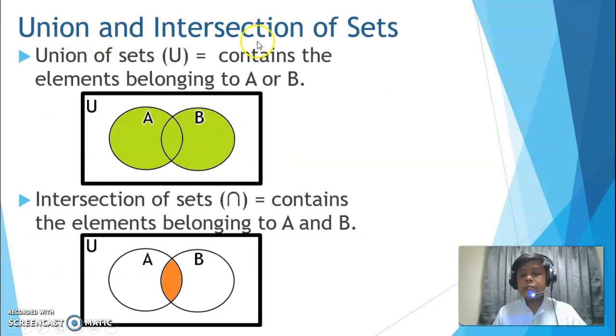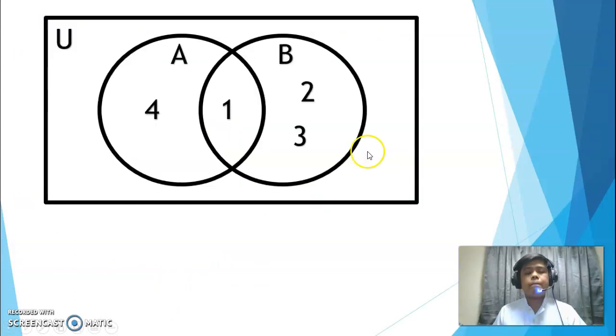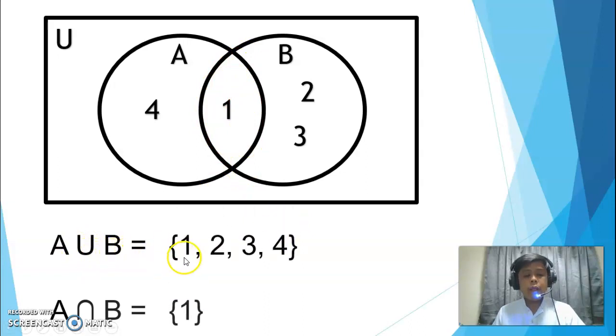Next, union and intersection of sets. When we say union, its symbol is like this, a U. It contains elements belonging to A or B. If we notice in our Venn diagram, what is shaded? A and B. When I say union, we combine all those elements. With intersection, it's an inverted U. It contains the elements belonging to A and B. What is shaded? The middle. Let's have an example. Here. Set A and set B. What is A union B? Earlier, with union, everything is shaded. So, we list them all. With intersection, just the middle. So, our answer will be, when A union B, you have 1, 2, 3, 4. With intersection, just the middle, 1.